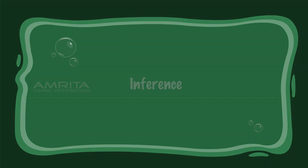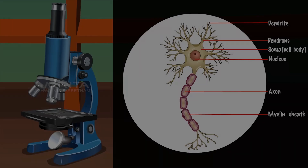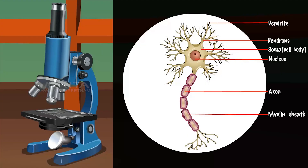Inference: The presence of cells with a large cell body, one prominent nucleus, dendrons, and a large axon confirms that the tissue seen on the slide is nerve tissue.